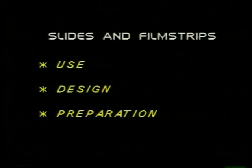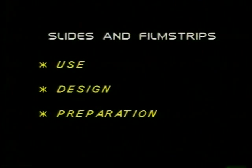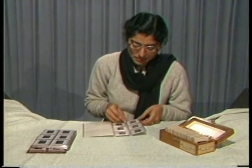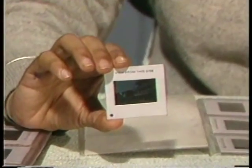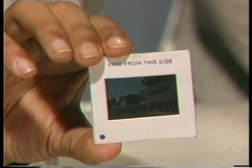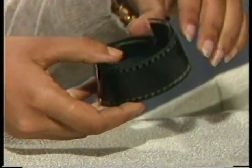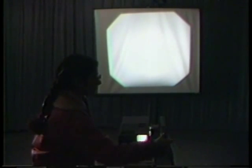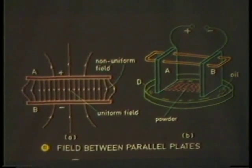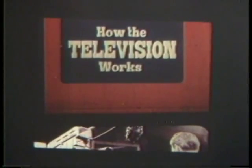In this program, the use, design and preparation of slides and film strips will be discussed. Slides and film strips are images of any object; when these are projected with the help of a projector in a dark room, a bright and magnified image is seen on the screen. A film strip is a series of slides in sequence to show a step-by-step process.